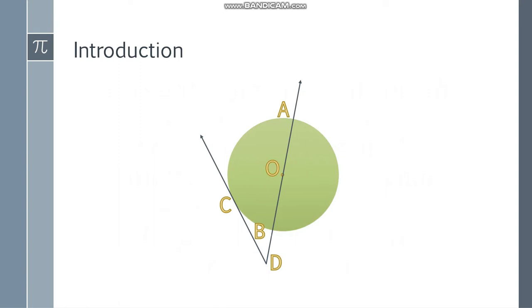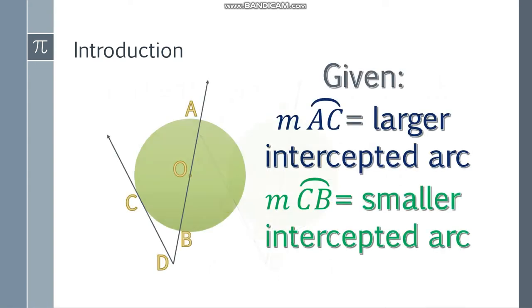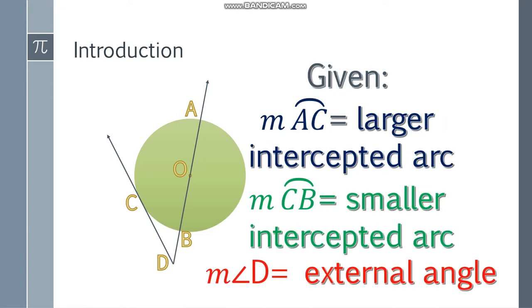We are asked to find the external angle that will be angle D. Okay so here is the breakdown: measure of arc AC, that will be the larger intercepted arc, and arc CB that will be the smaller intercepted arc. We are asked to find the measure of the external angle that is angle D.